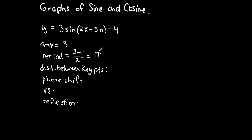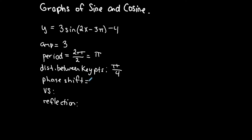That means one full revolution occurs in π radians. I always tell my students to find the distance between key points to make life easier when finding the x-coordinates. It is always the period divided by 4 — you're always taking the period and cutting it into four pieces.